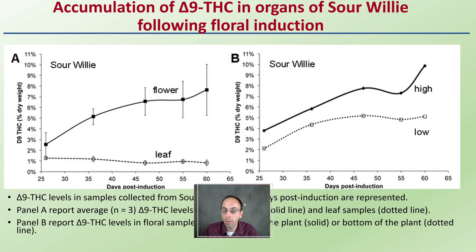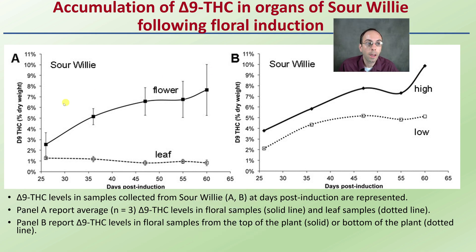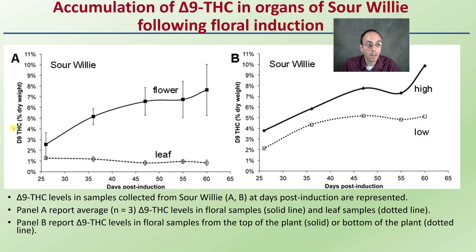Here's what we're looking at. We have the Sour Willy variety, looking at that accumulation of our Delta-9. We have the leaf and we have the flower. On our y-axis, we have the Delta-9 THC percent dry weight in both examples, and then we have days post flower induction on the x-axis.